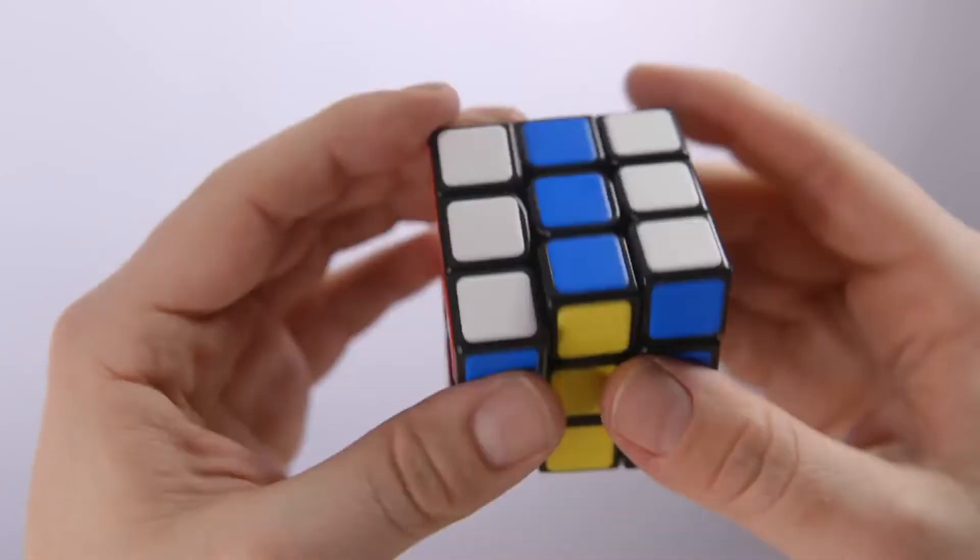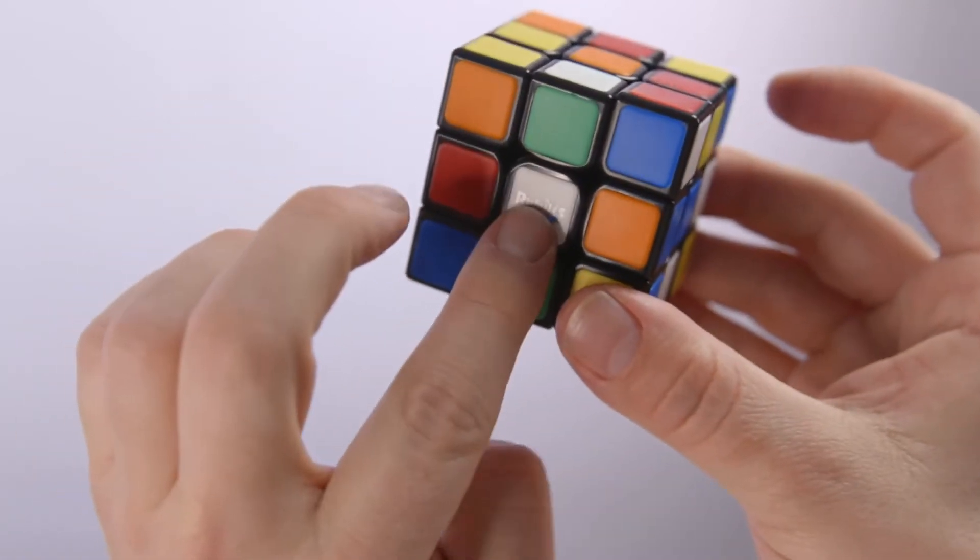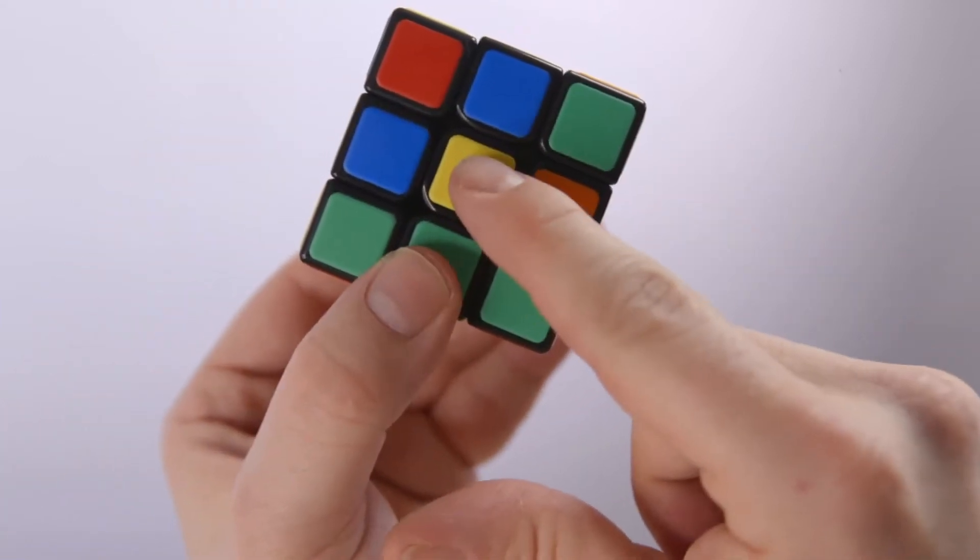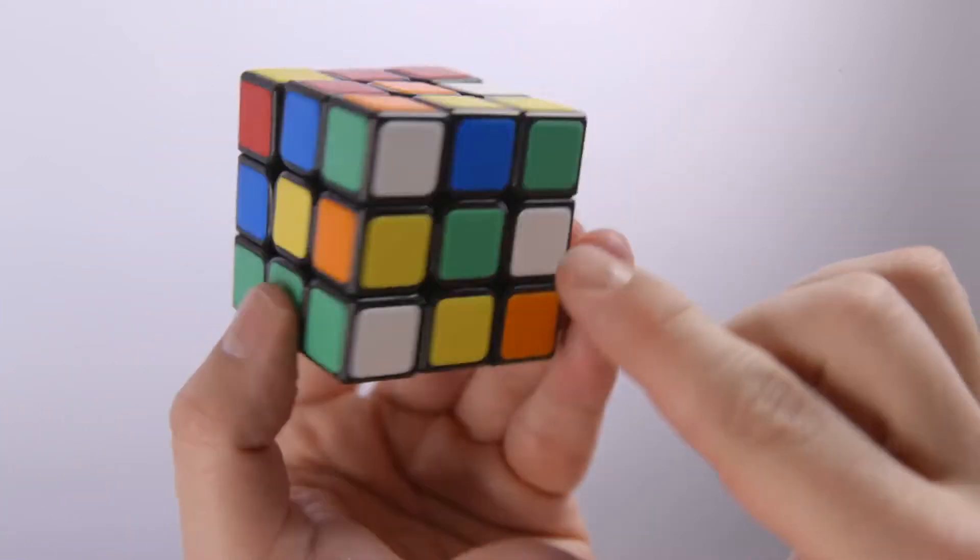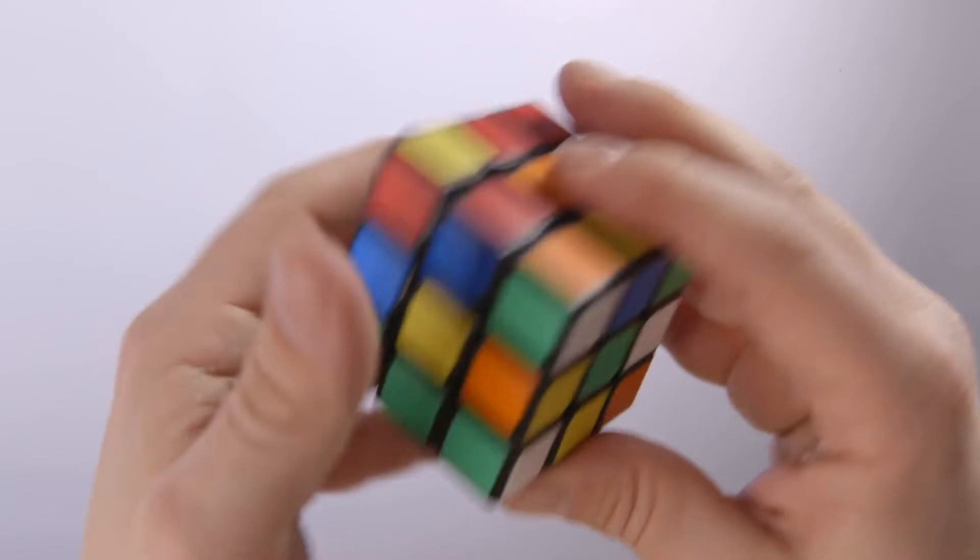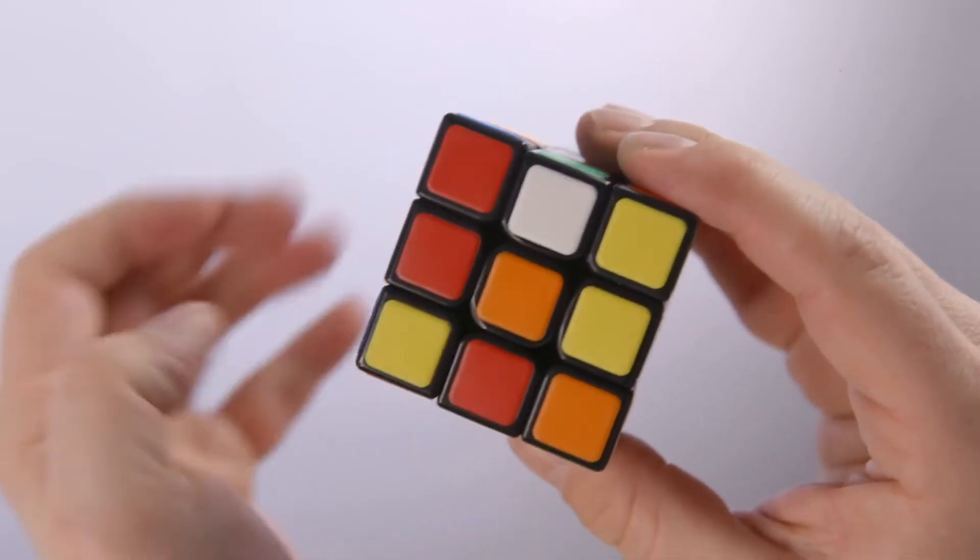This is how you know what color the side is. So if we mess it up, this will be the white side. Its opposite will be the yellow, and the same with the blue and green, and the red and the orange. The center piece is the color of that side.